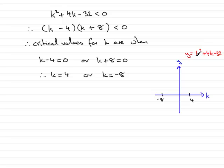Now, we've got a positive k squared term, so it's going to be a u-shaped parabola. So it's going to come down through the minus 8 and then back up through the 4. So we've got something like that.